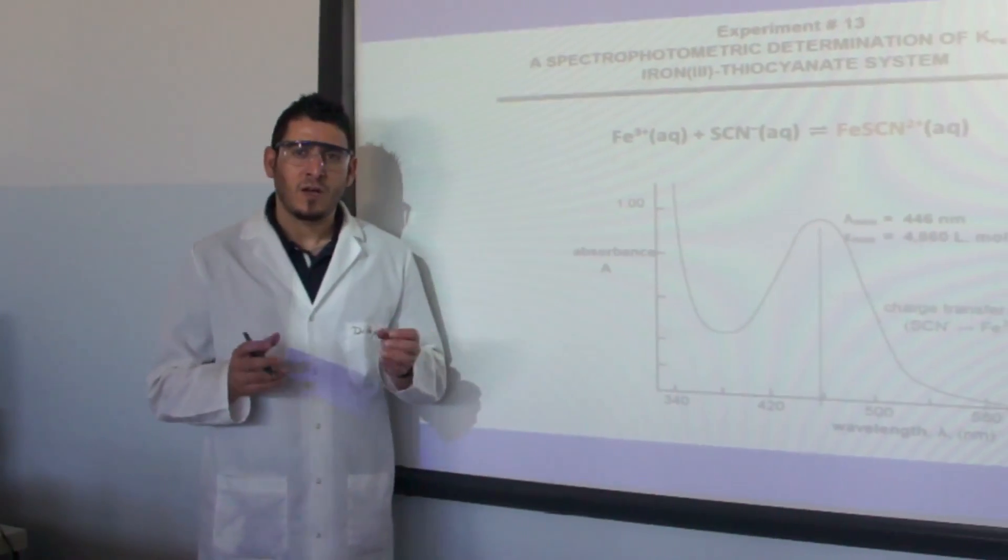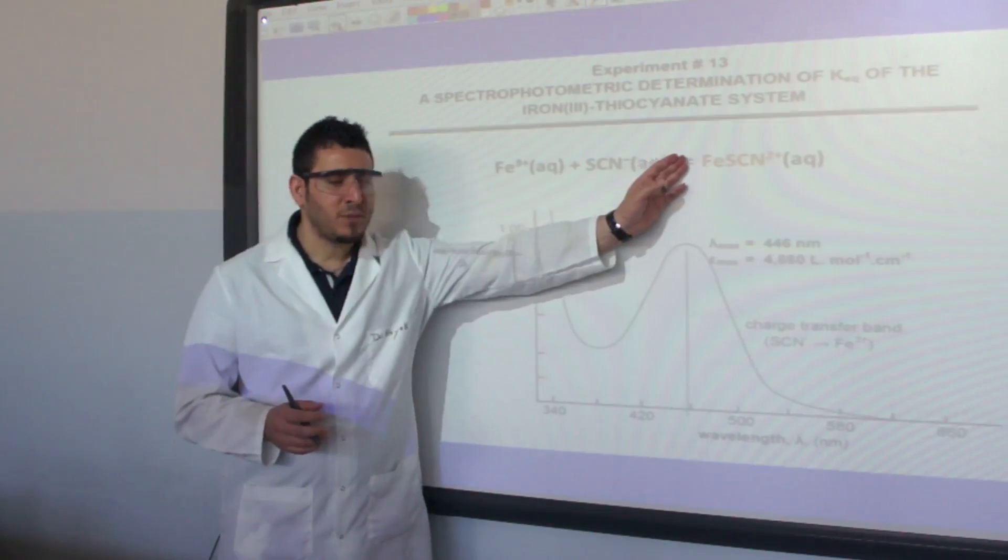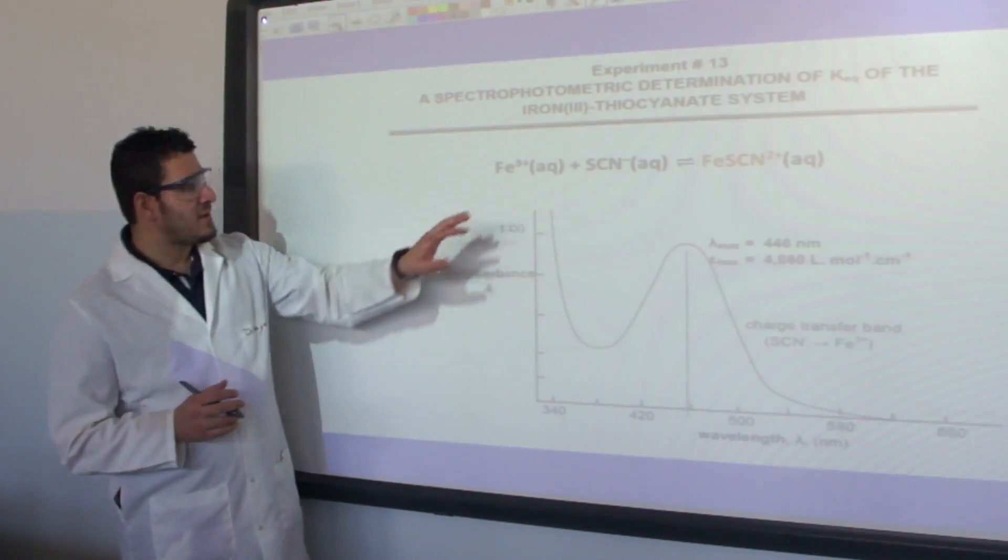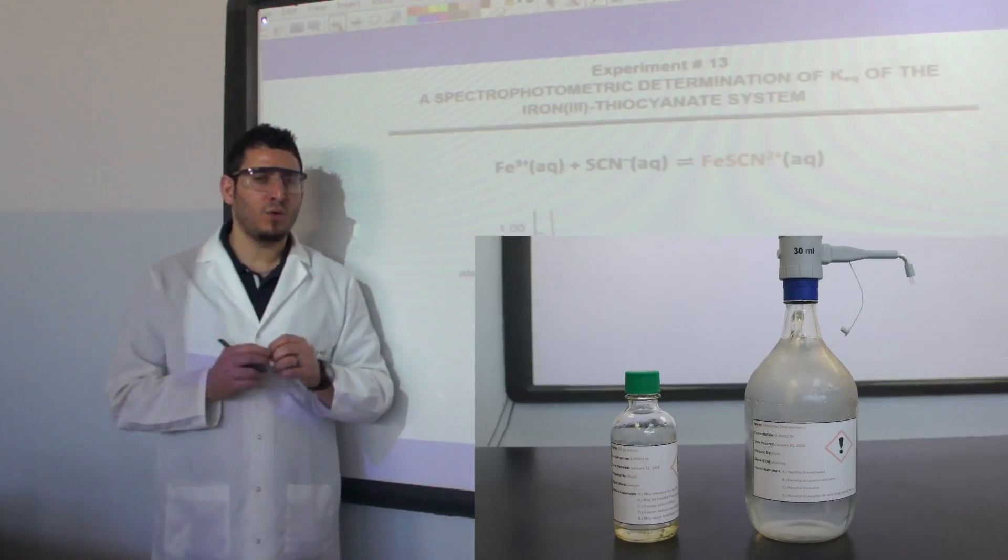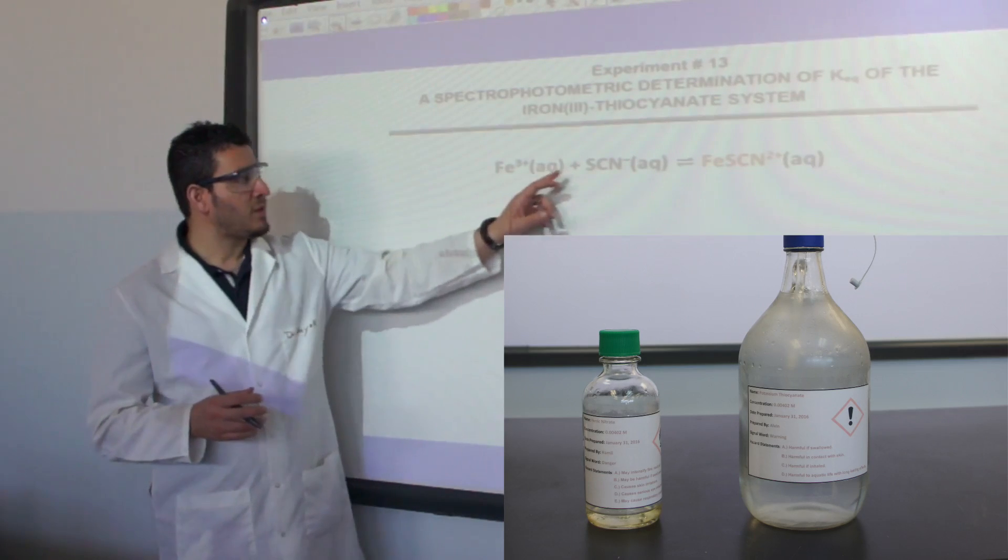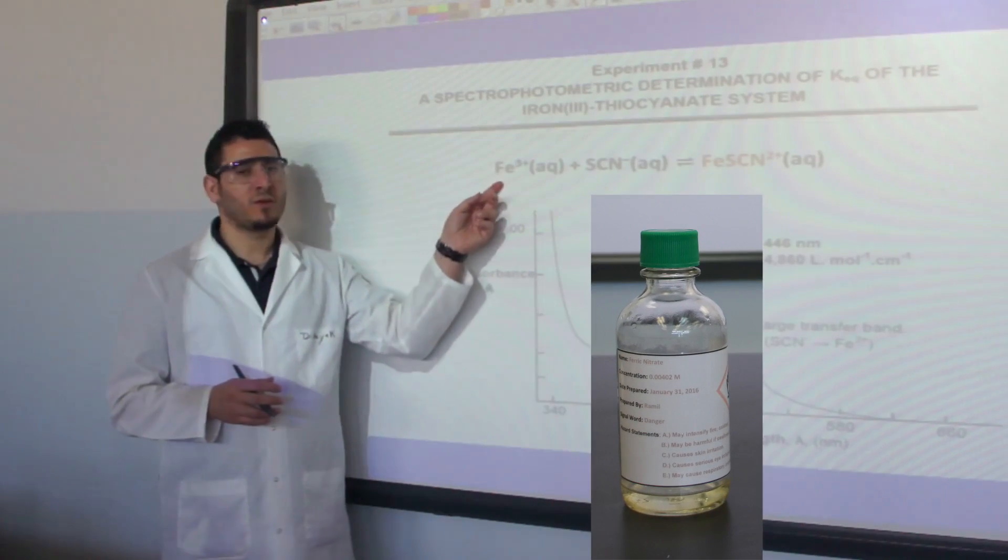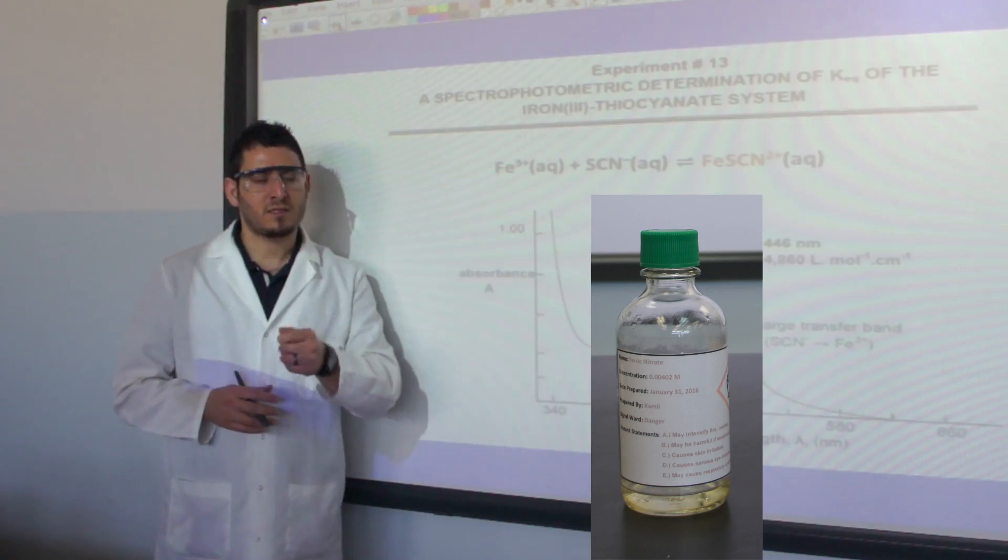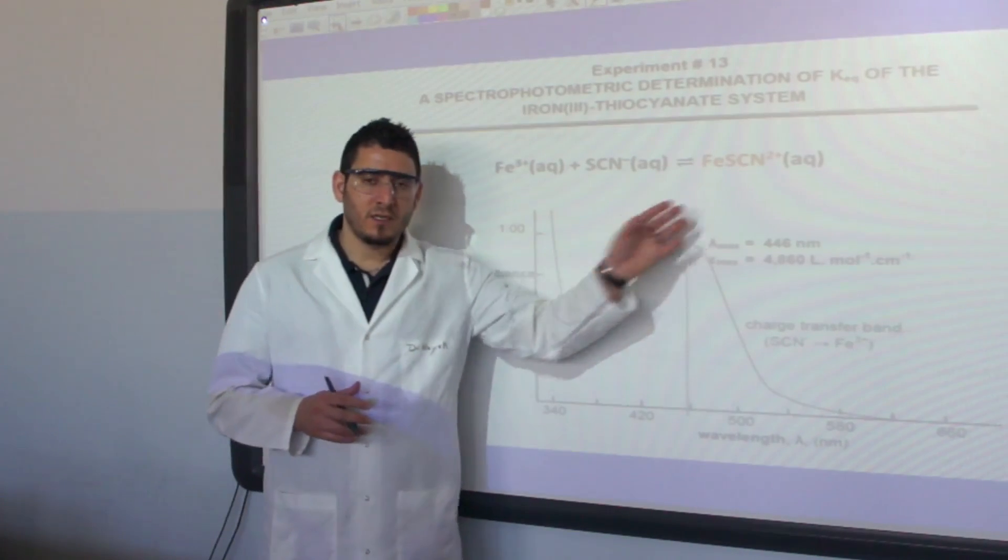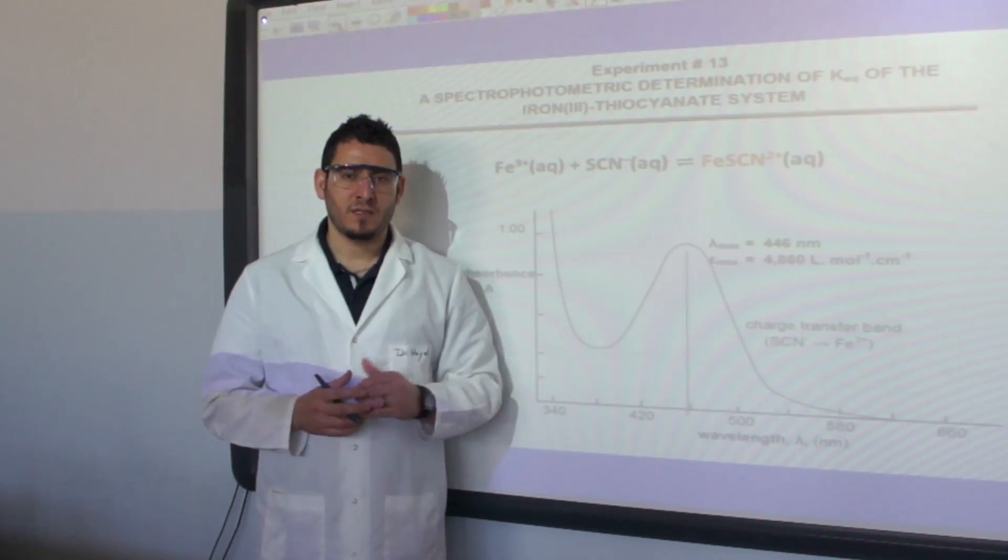For this experiment we have chosen the following system: iron-3 will react with thiocyanate to give the complex iron thiocyanate. Why did we choose this system? Because the reactants are colorless or they have very pale color. With the low concentrations we are working with, both reactants will appear almost colorless with a pale yellow for the iron nitrate solution, but it's still diluted and the color is not very strong. I want the only colored species in my solution to be the complex iron thiocyanate.